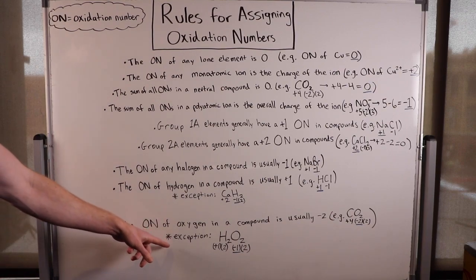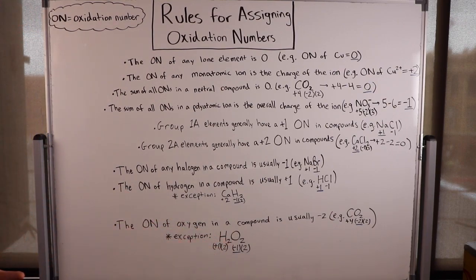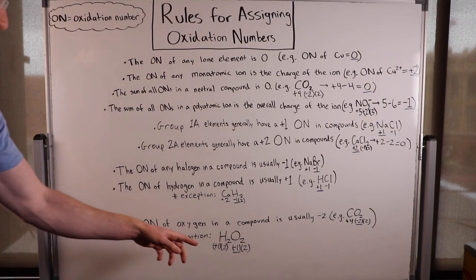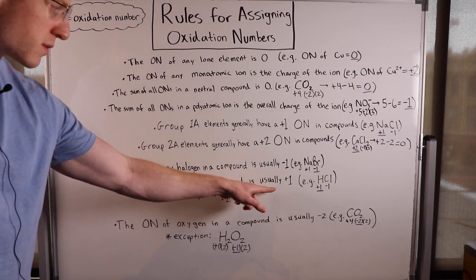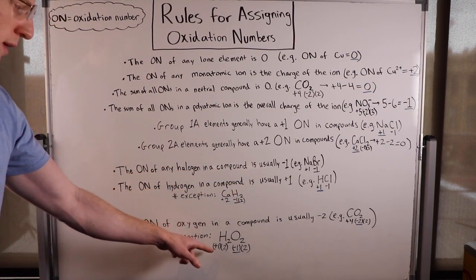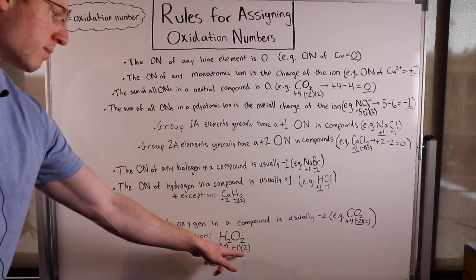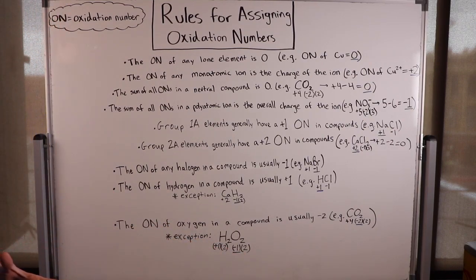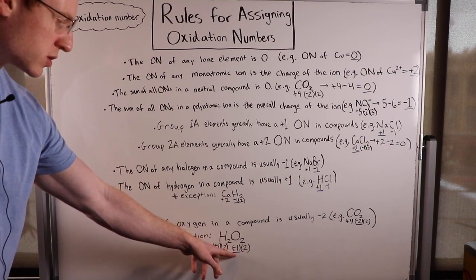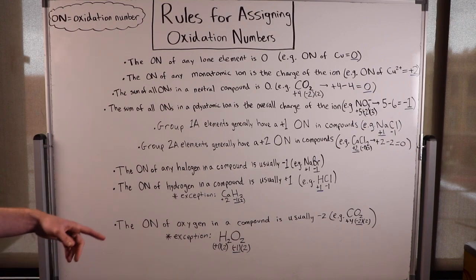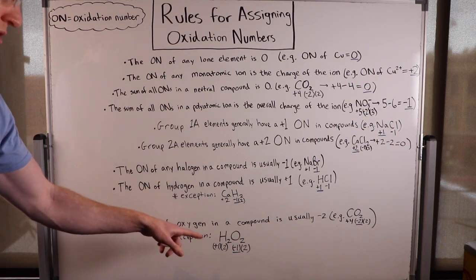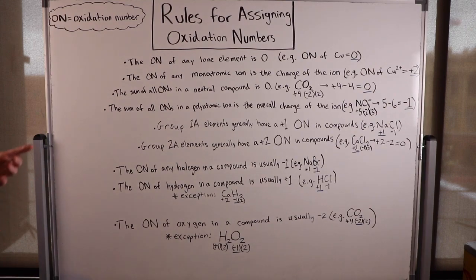An exception here is peroxide. In that case, hydrogen will have a plus one charge as usual, and there are two of them, so we have to balance out that plus two charge with a minus two total from the oxygen. Since there are two oxygens, each one has a minus one charge — so the oxidation number of oxygen in a peroxide is minus one. There are a few exceptions to these rules, but if you remember all of these, you should be well on your way to efficiently and accurately assigning oxidation numbers.